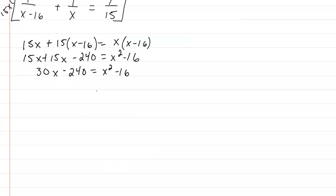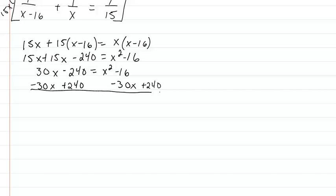Combining like terms gives us 30x minus 240 equal to x squared minus 16x. Getting everything on one side by subtracting 30x and adding 240, we get 0 equal to x squared minus 46x plus 240.